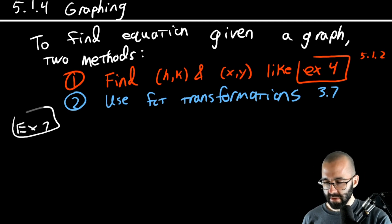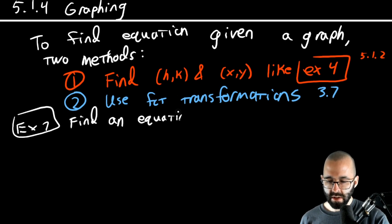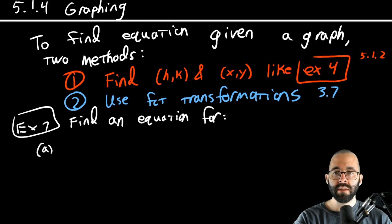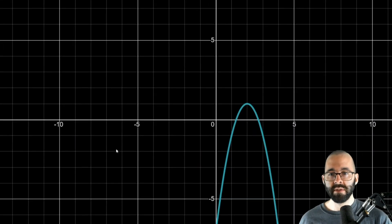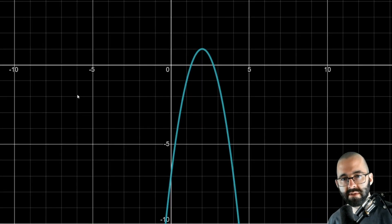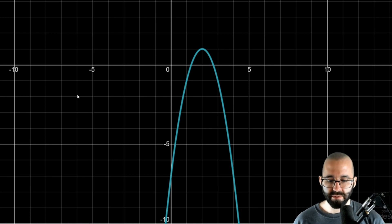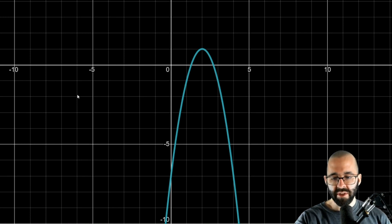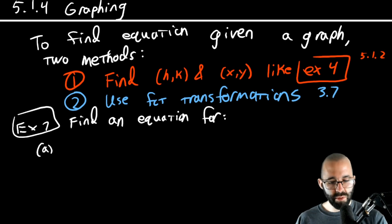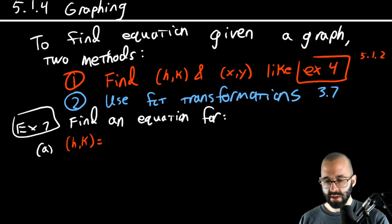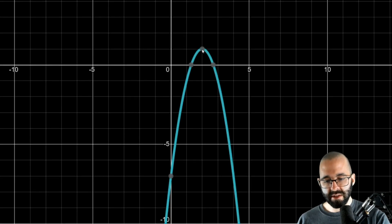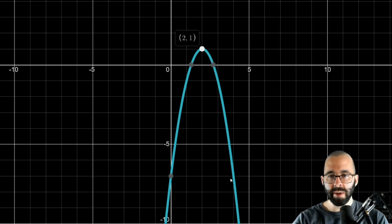Example seven: find an equation for these functions. It might be a good idea to pause the video and copy this graph down for your notes. Let's do both methods on this one. First off, what's our h and k — what is the vertex of this graph? The vertex is right here: it's the point (2, 1) — we're right two from the origin and up one.